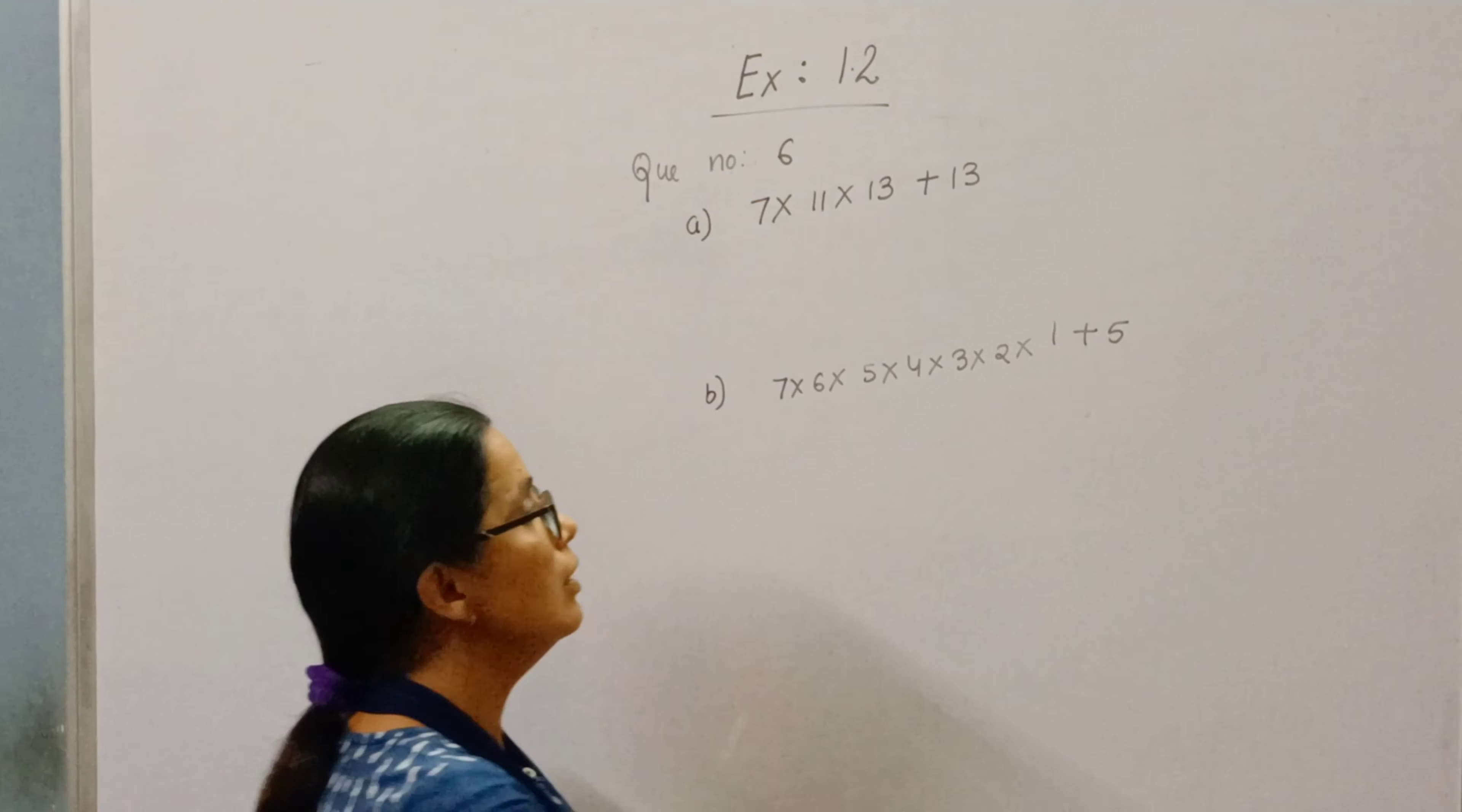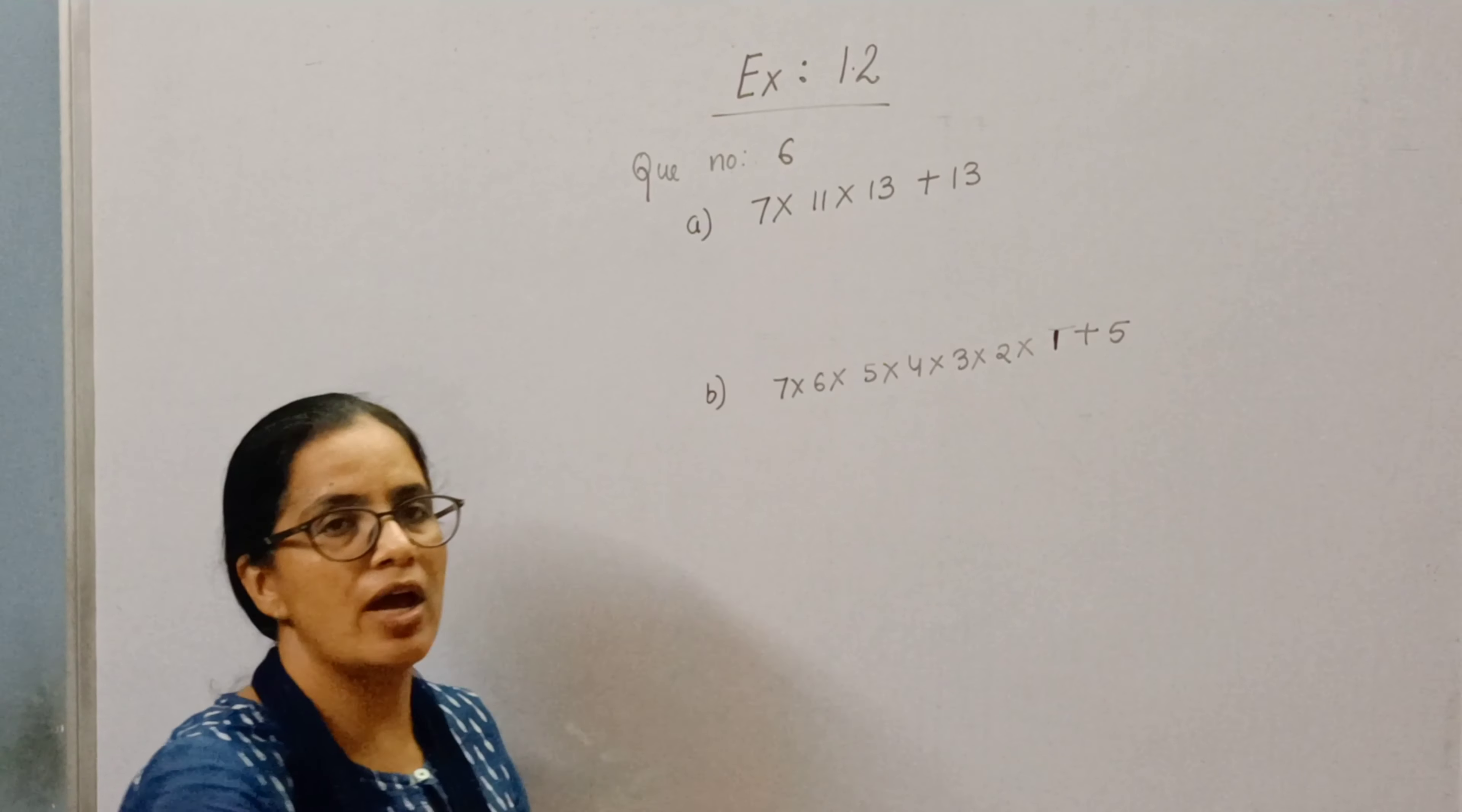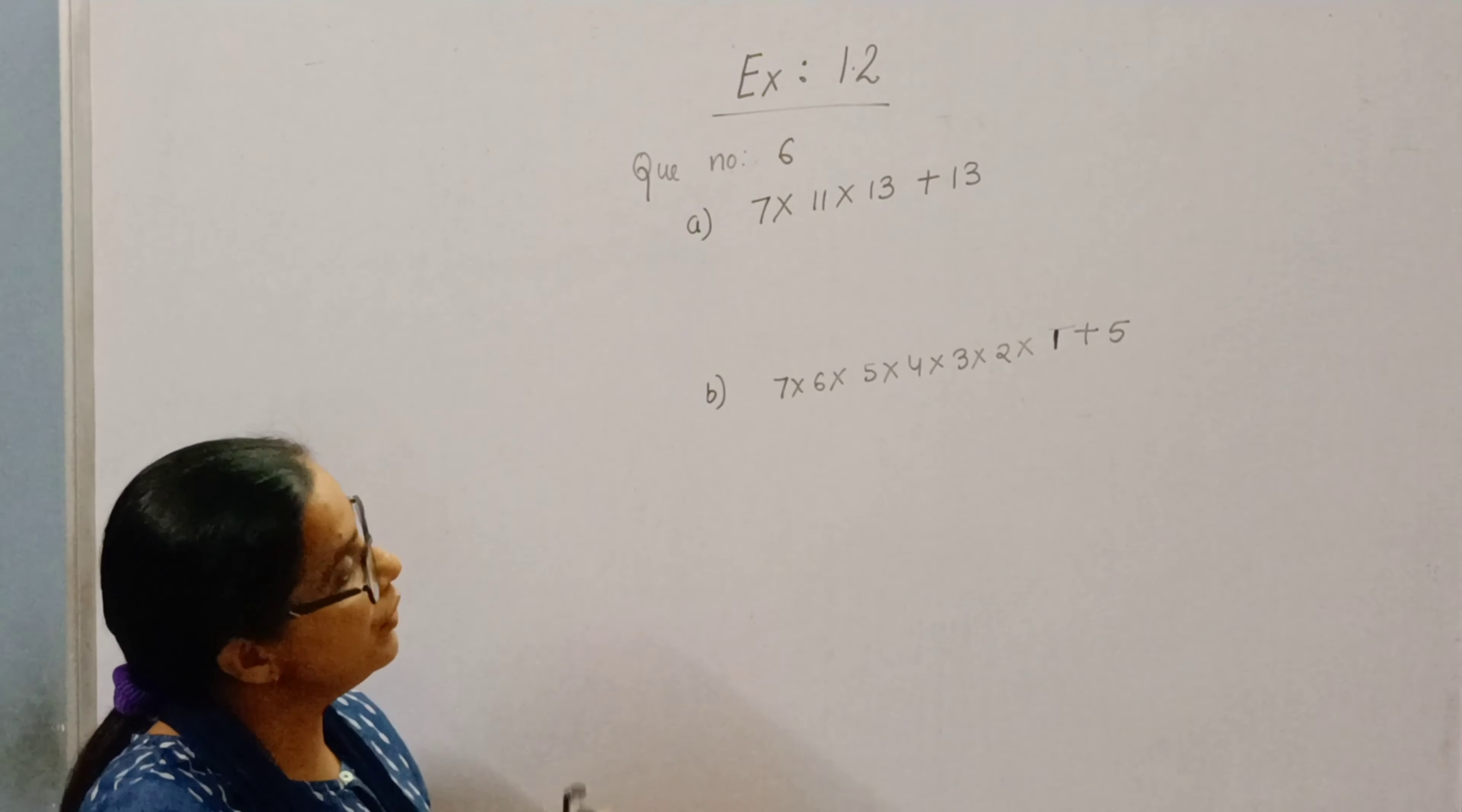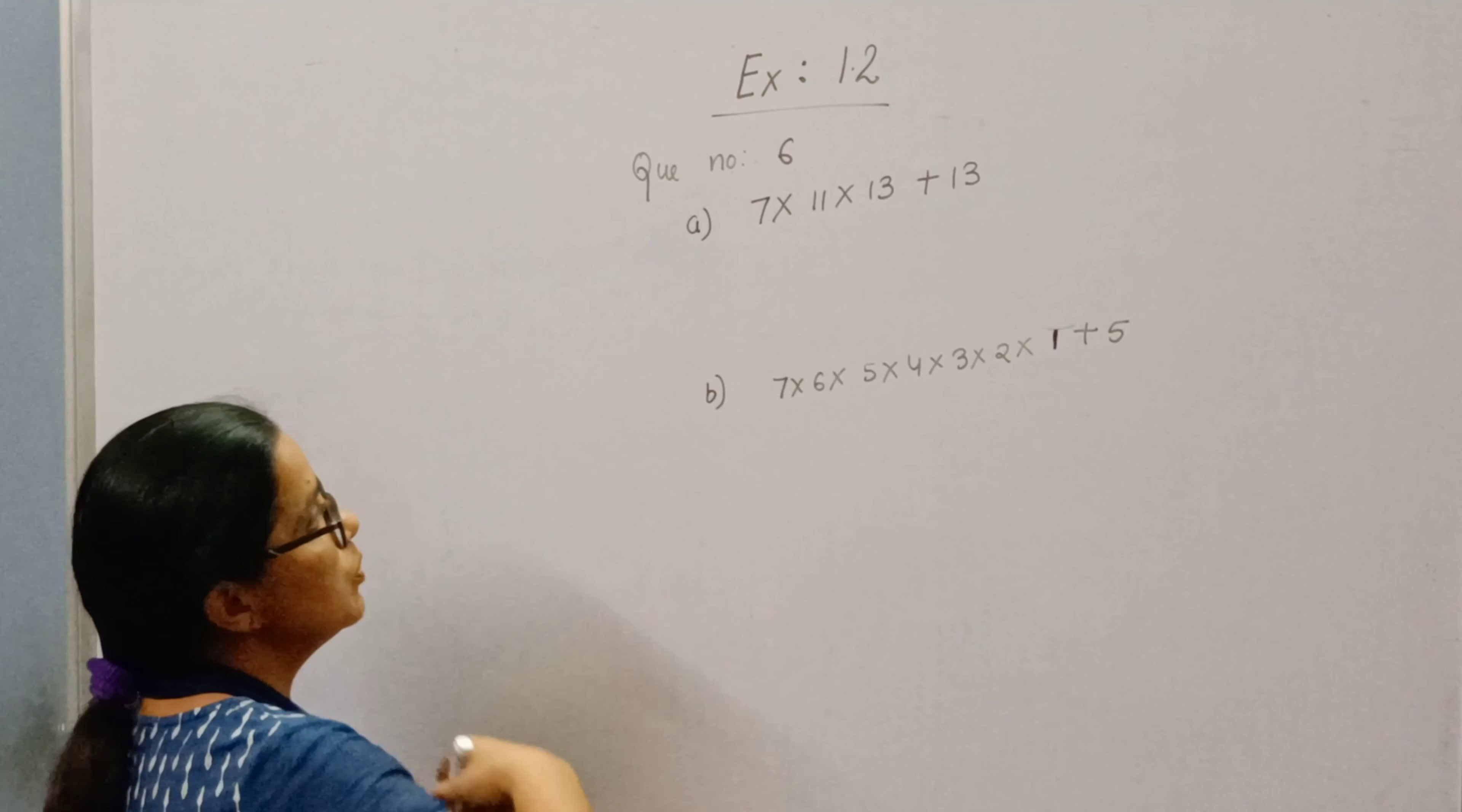Now you know what are composite numbers. Composite numbers are those numbers which have factors other than 1, or you can say that come in tables of other numbers. So let's prove it.